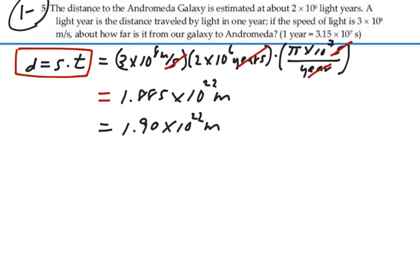That is how far away the Andromeda galaxy is from us in terms of meters. 1.9 times 10 to the 22 meters.